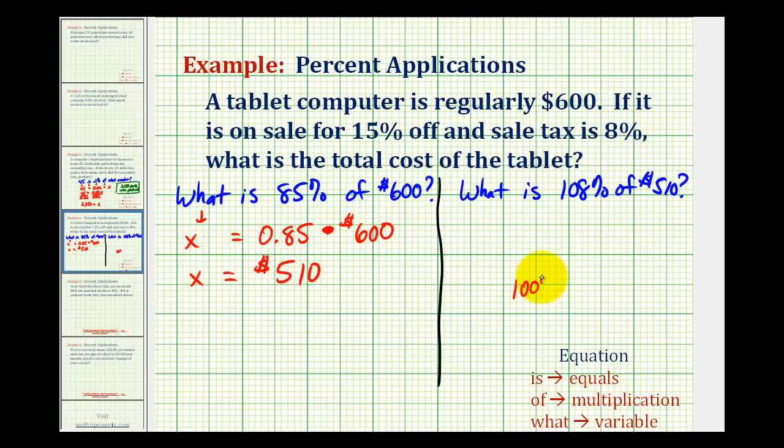So the 100% represents the sale price of the computer, plus the 8% sales tax is where the 108% came from. So if we do this all in one step, it saves us from having to find 8% and then adding it to $510.